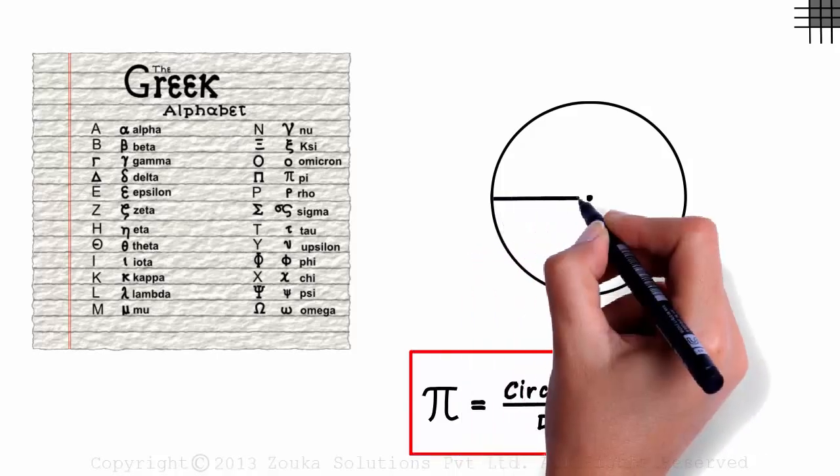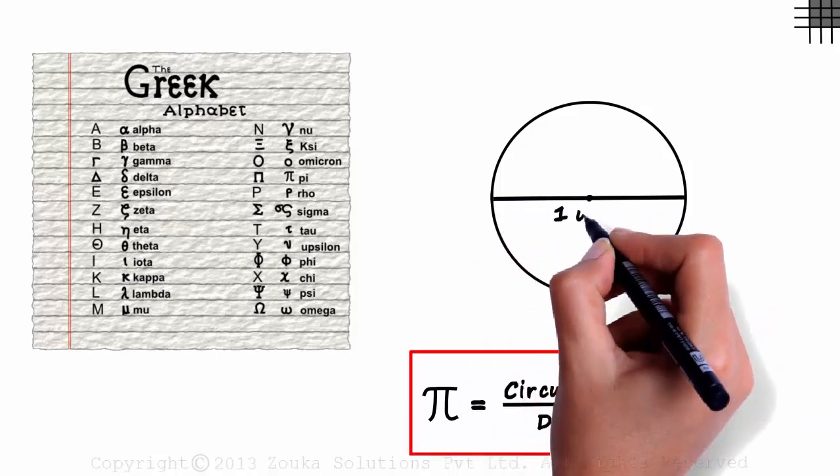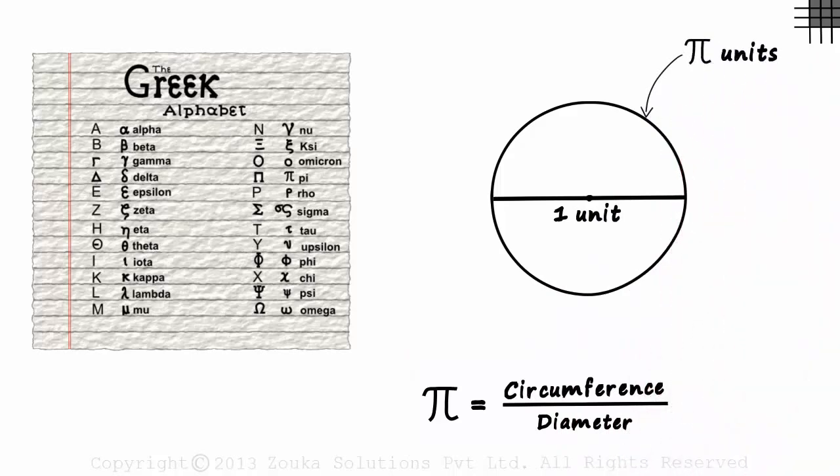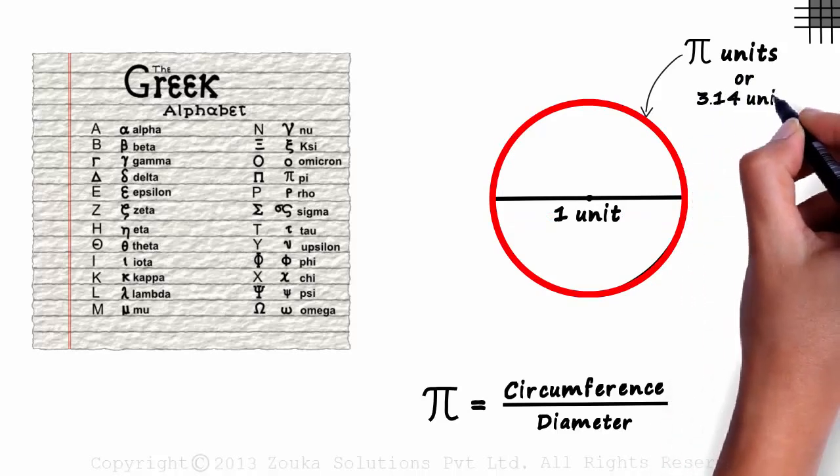Based on the formula, if the diameter of the circle is one unit, then its circumference will be pi units. If we have a circle like this with diameter equal to one unit, then the length of this boundary will be π or approximately 3.14 units.